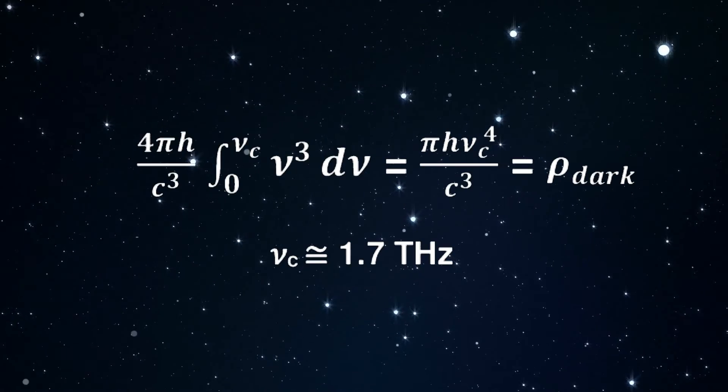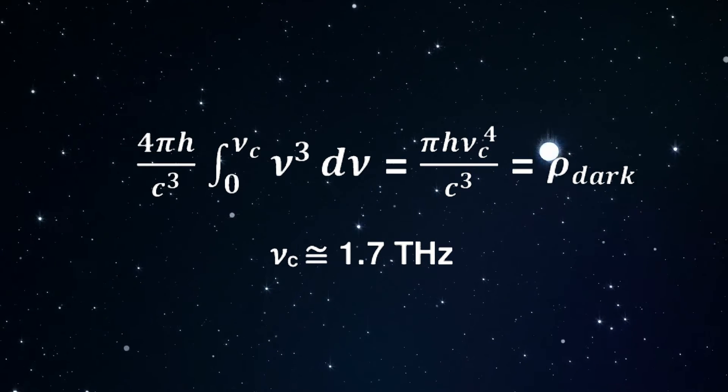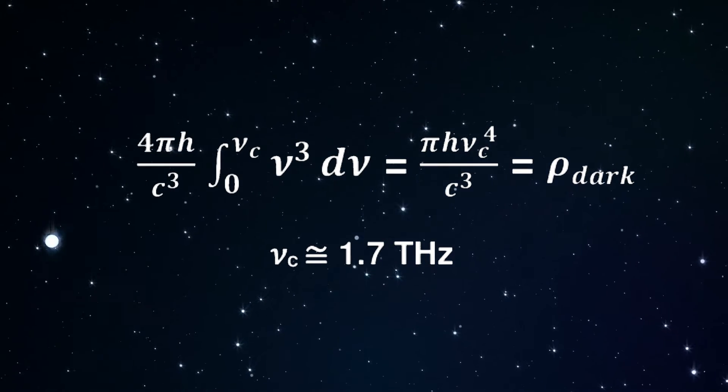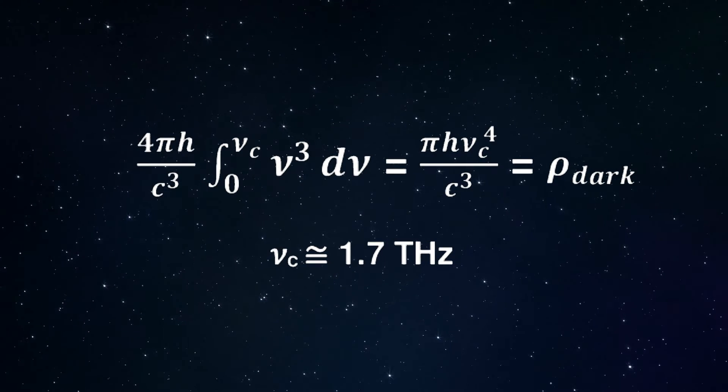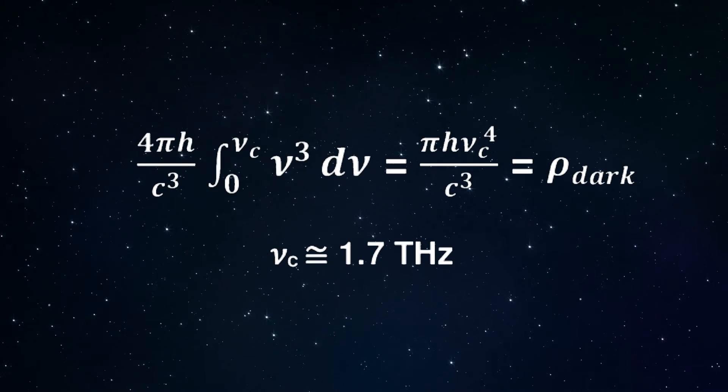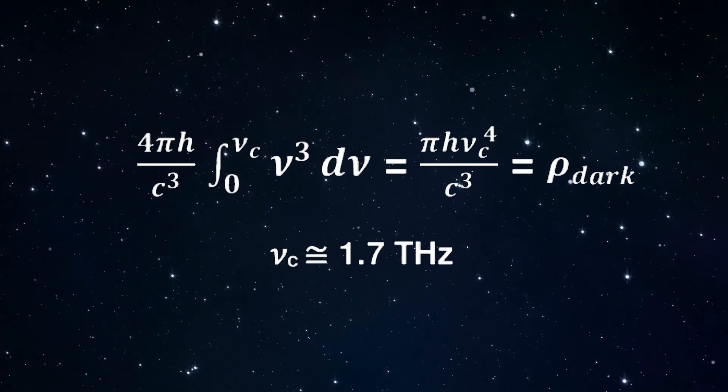For the prominent pentagonal dodecahedral water nanocluster, the cut-off vibrational frequency is approximately 1.7 terahertz. This formula produces the correct, relatively small dark energy density, namely 3.6 GeV per cubic meter.